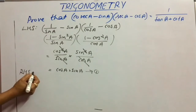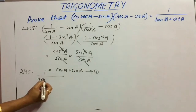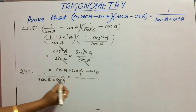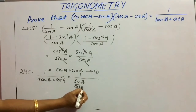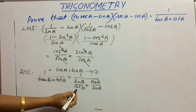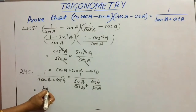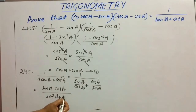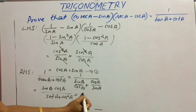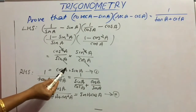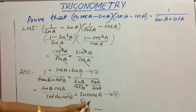Let this be equation 1. Consider RHS: 1/(tan A + cot A). Since tan A = sinA/cosA and cot A = cosA/sinA, taking sinA·cosA as LCM, the denominator becomes sin²A + cos²A = 1. So the result is sinA·cosA — let this be equation 2. Comparing equation 1 and 2, we conclude they are equal, which proves the statement.